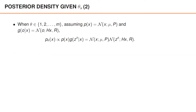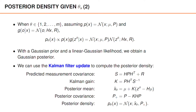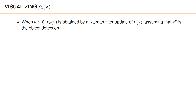To obtain closed-form expressions, we also assume that P of x is a Gaussian density and that g of z given x is linear and Gaussian. Stating that Pθ is proportional to a Gaussian prior times a linear and Gaussian likelihood function implies that Pθ is the posterior when we update this prior by this likelihood, which means that Pθ is a Gaussian density. In fact, we can use the Kalman filter equations to compute the mean and covariance of the Gaussian density Pθ. We've concluded that if θ is greater than 0, Pθ can be computed using a Kalman filter update, where we assume that zθ is the object measurement.